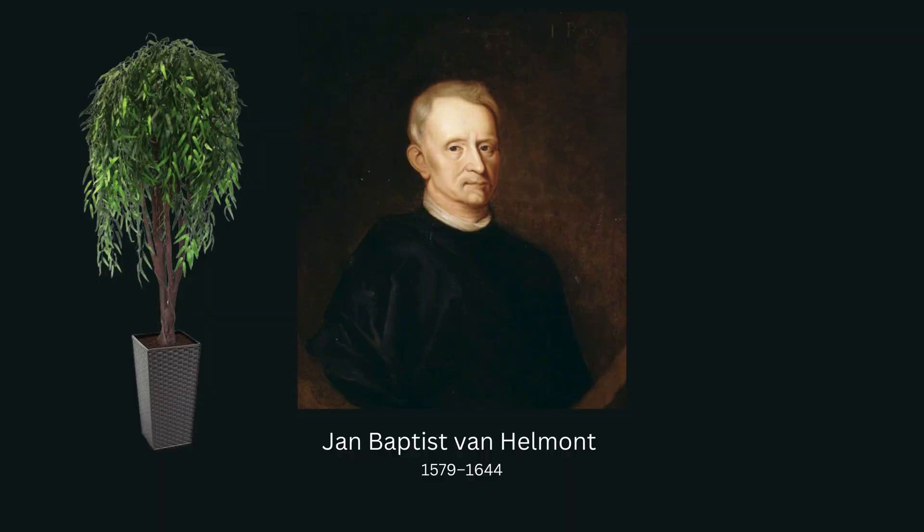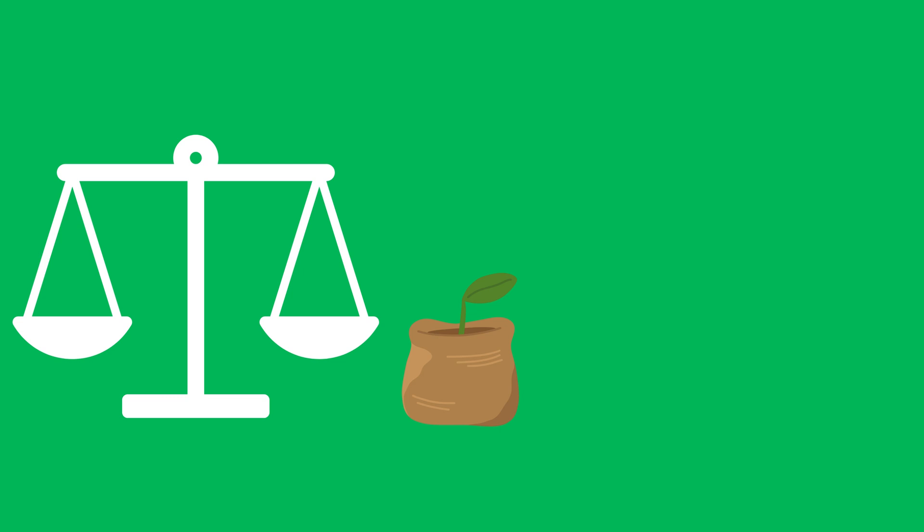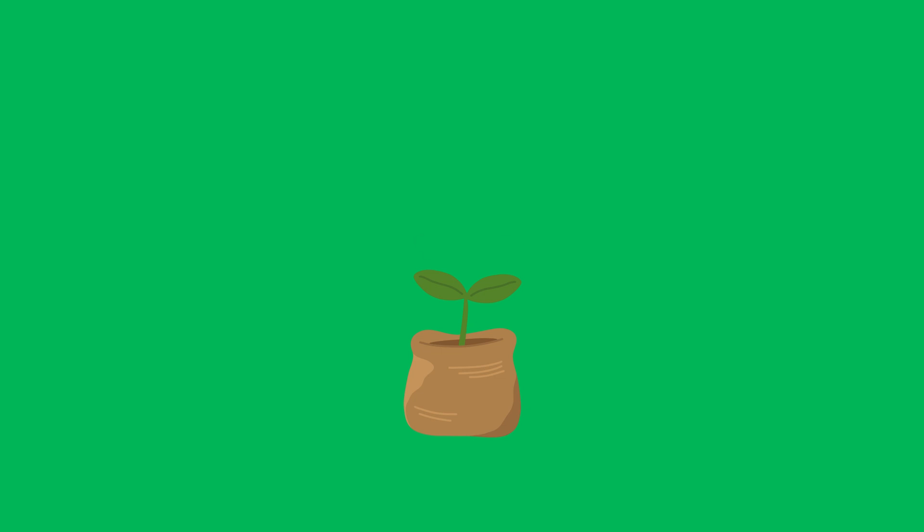Then in the 1630s, a Flemish scientist called Jan Baptiste van Helmont finally put this to the test. He got a pot of soil and very carefully weighed the mass of soil in there. He then weighed a willow tree sapling and planted it in the soil. He took care of the tree for five years, making sure that no soil was added to the pot. All he did was water it. At the end of the experiment, he weighed the tree again.